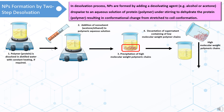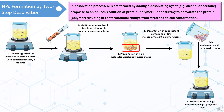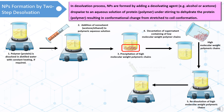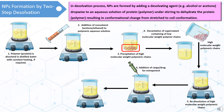The obtained precipitate is redissolved in distilled water to make a homogeneous aqueous solution. To this solution, a cargo or a drug to be entrapped within the nanoparticles can be added. After adding the cargo or drug with stirring, a non-solvent is added again to the aqueous solution of the polymer and drug.